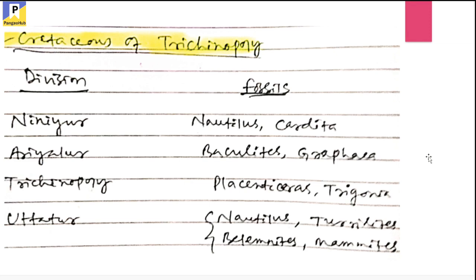Next is the Cretaceous of Trichinopoly. Trichinopoly is situated in Tamil Nadu. There are mainly four litho units: Utatur Formation, Trichinopoly Formation, Ariyalur Formation, and Niniyur Formation, from older to younger, bottom to top. The Niniyur Formation holds Nautilus and Cardita. The Ariyalur Formation holds Baculites and Graphaea. The Trichinopoly Formation holds Placenticerus and Trigonia fossils, and also holds some fossil remains of dinosaurs. The Utatur Formation holds Nautilus, Turriloides, Belemnites, and Ammonites — these are typical fossils of the Cretaceous of Trichinopoly region.